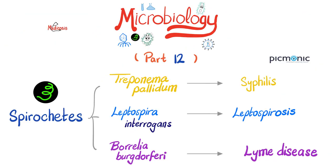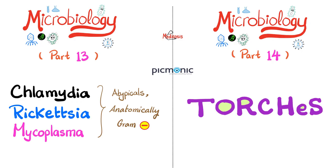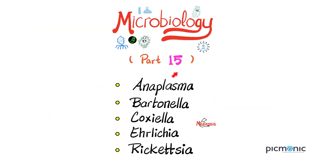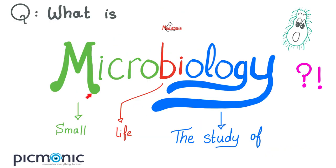In part 12, we talked about Treponema pallidum, Leptospira, and Borrelia. In part 13, we talked about Chlamydia, Rickettsia, and Mycoplasma. In part 14, we talked about the TORCH infections. In part 15, the last video, we talked about Anaplasma, Bartonella, Coxiella, Ehrlichia, and Rickettsia.